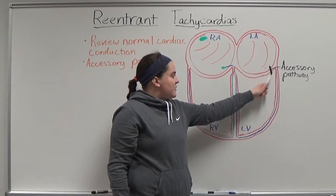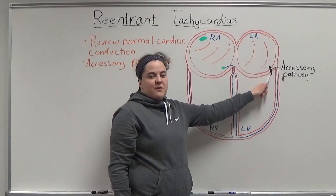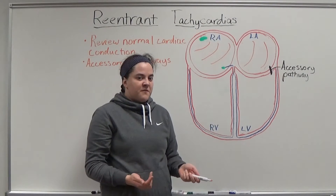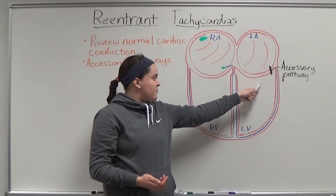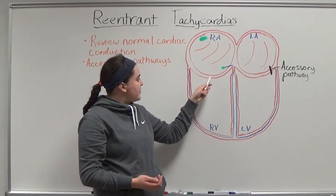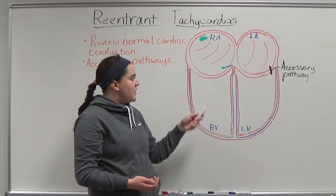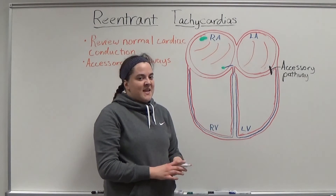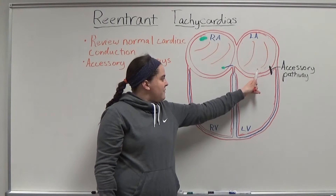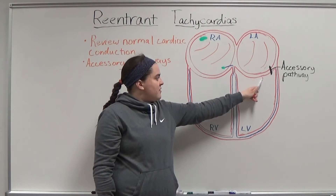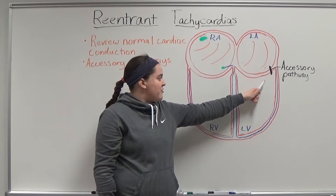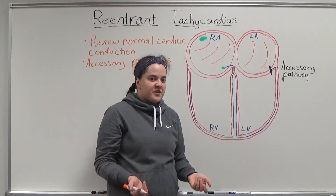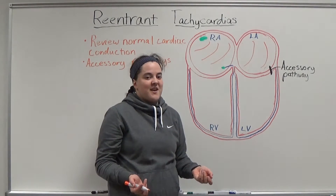However, some people have what's called an accessory pathway. An accessory pathway is conductive tissue that links the atria and the ventricles, and it can be located anywhere between the two. It's not always conducting, but when it is, it can send impulses directly from the atria to the ventricles or directly from the ventricles to the atria, which can create what's called a circus reentry tachycardia.